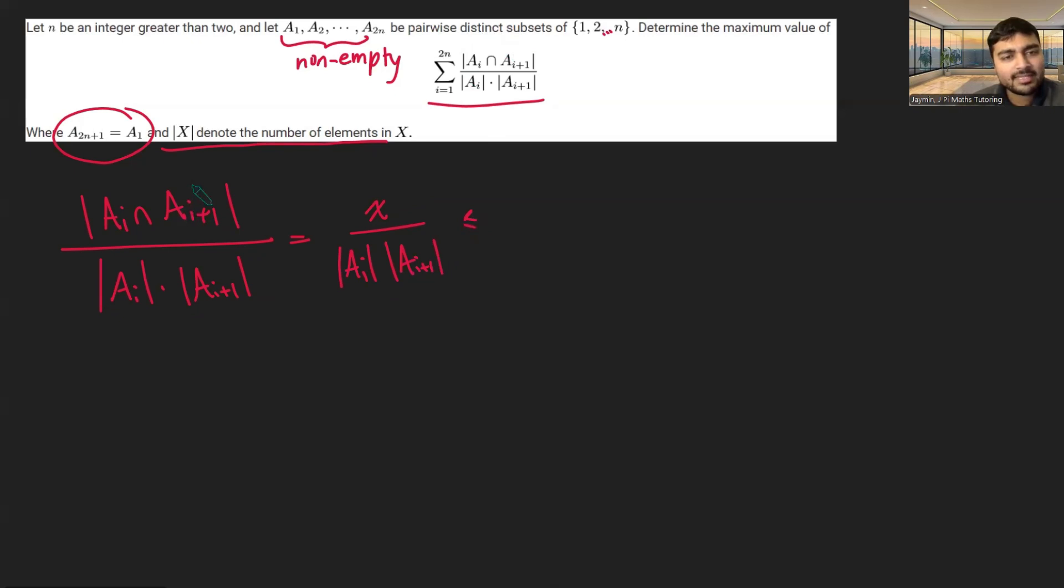Well, if this set here, we notice, is a subset of ai. And so therefore, if the size of the numerator is x, we know that this guy here must have size at least x.